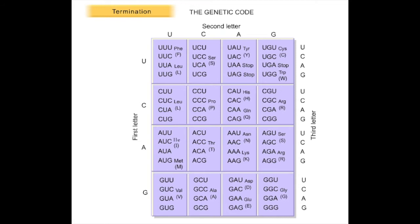Elongation continues until the ribosome reaches one of three stop codons: UAG, UAA, and UGA.